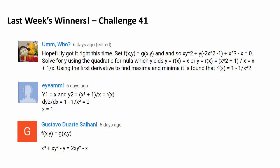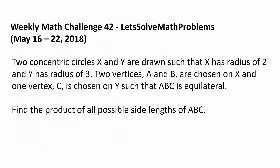Now it's time for this week's challenge. Two concentric circles X and Y are drawn such that X has a radius of 2 and Y has a radius of 3. Two vertices A and B are chosen on X and one vertex C is chosen on Y such that triangle ABC is equilateral. Find the product of all possible side lengths of ABC.